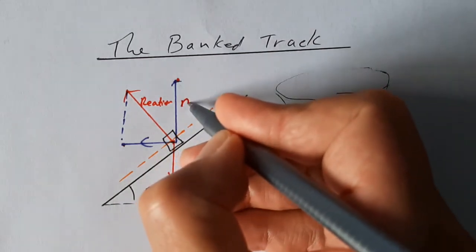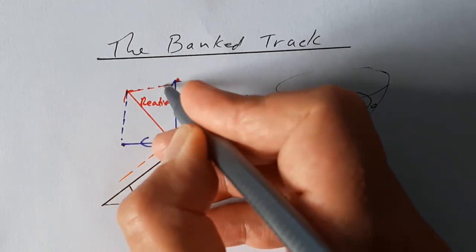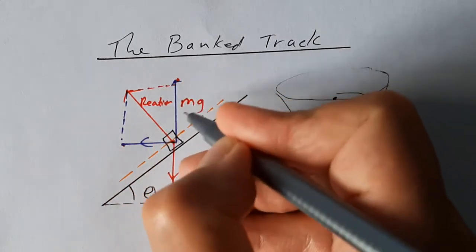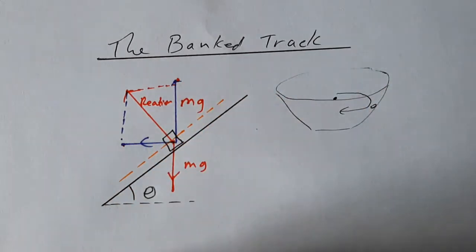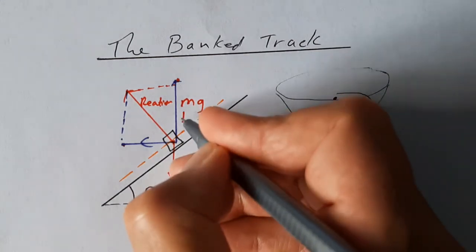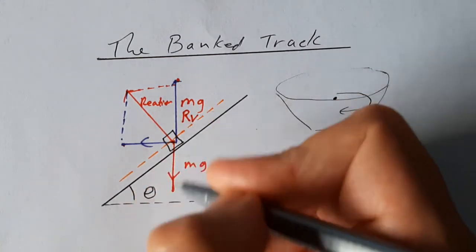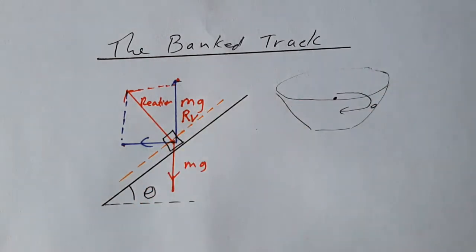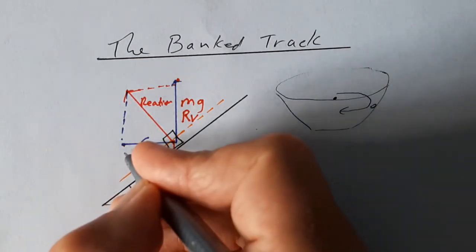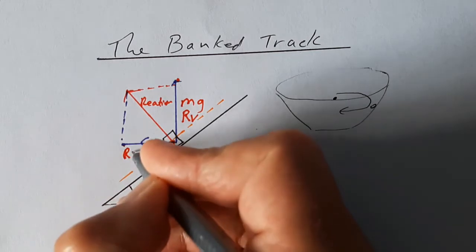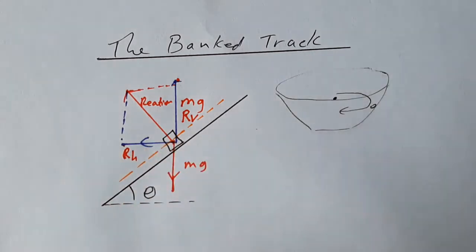We can add in - I haven't done that that neatly - but that is mg. Or we can sometimes call it Rv, the vertical component of the reaction force. And down here we have RH, R horizontal, and that's going to be equal to the centripetal force.